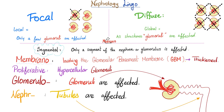Diffuse proliferative — what does diffuse mean? It means global: all of the glomeruli of your kidney are affected. What does proliferative mean? Hypercellularity — in this case, neutrophil proliferation.